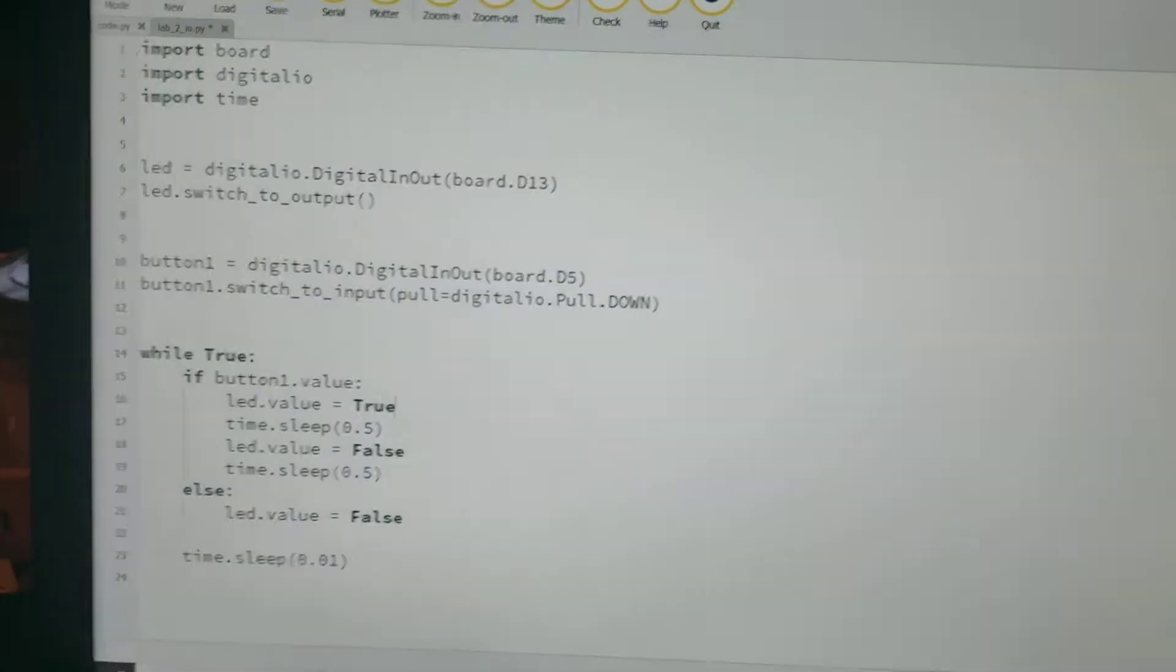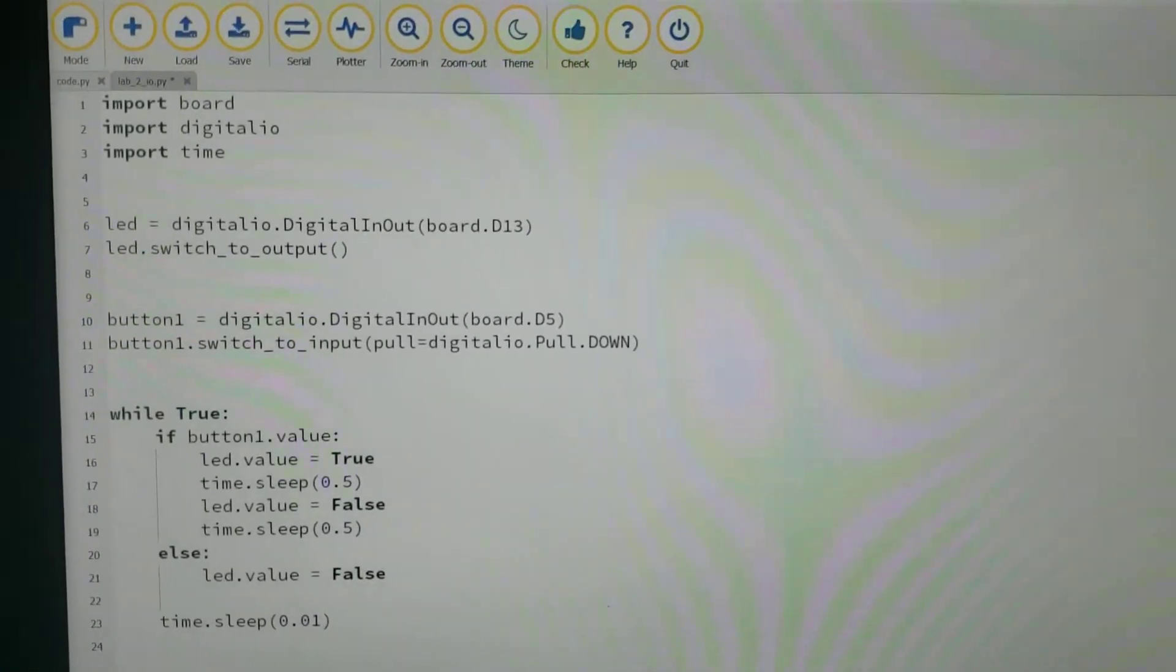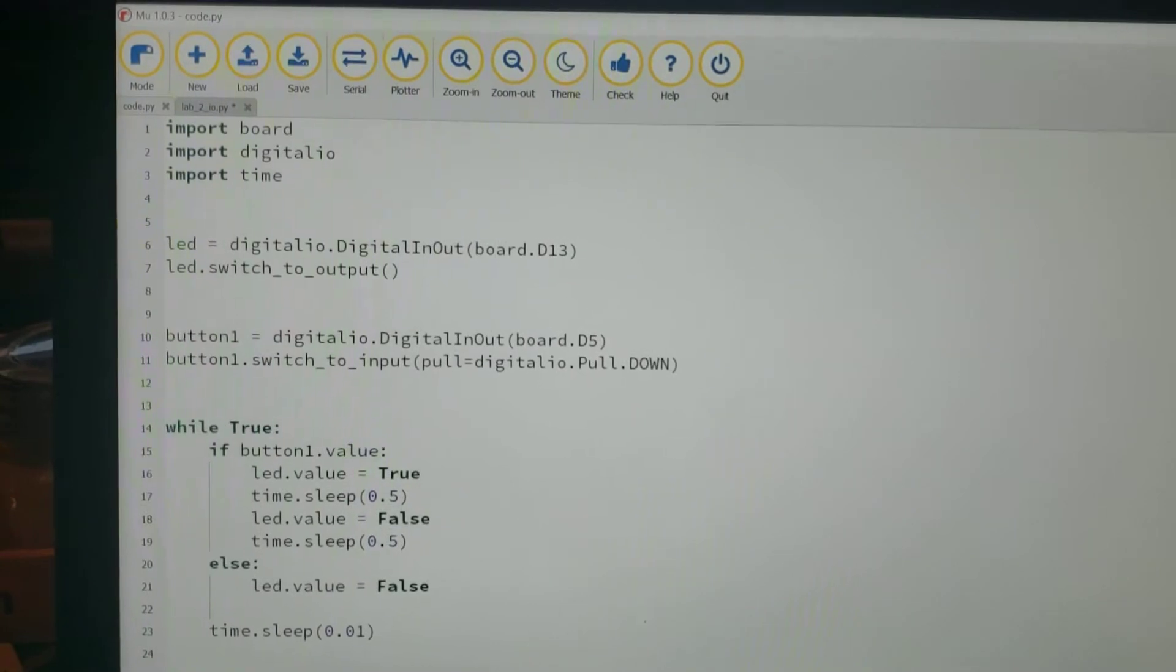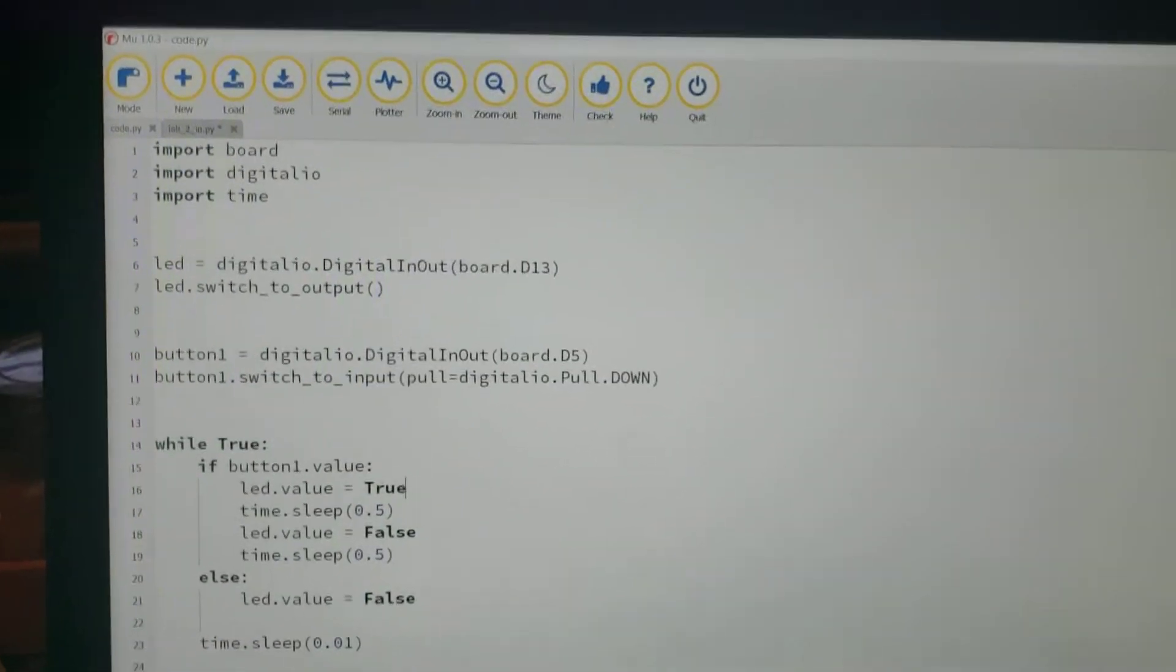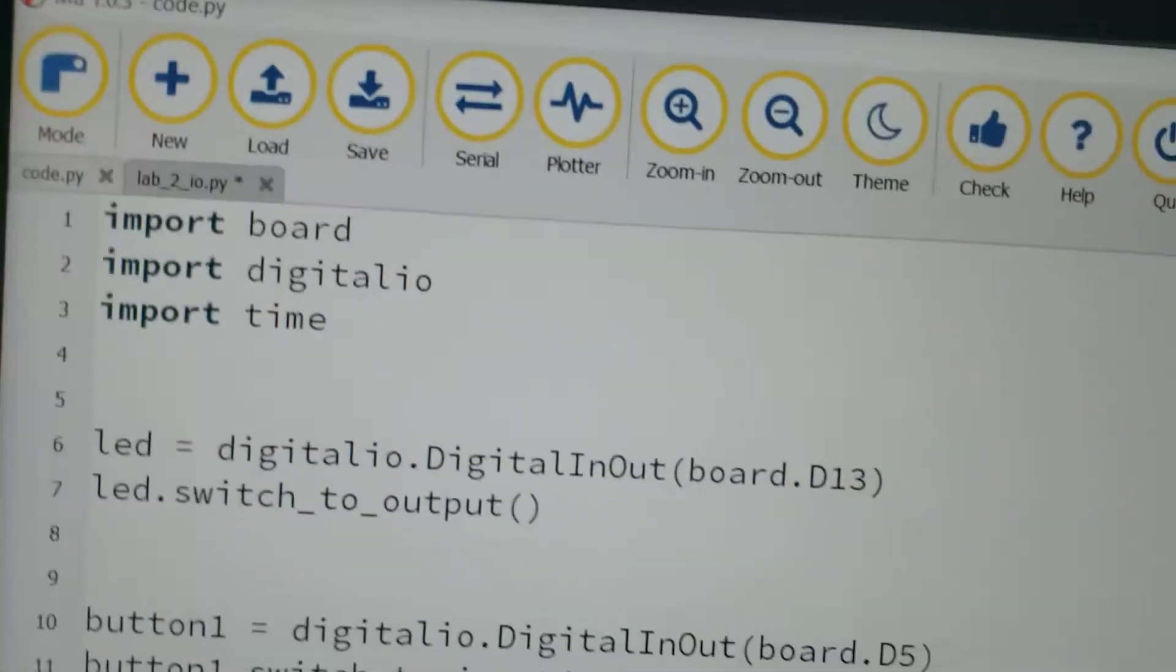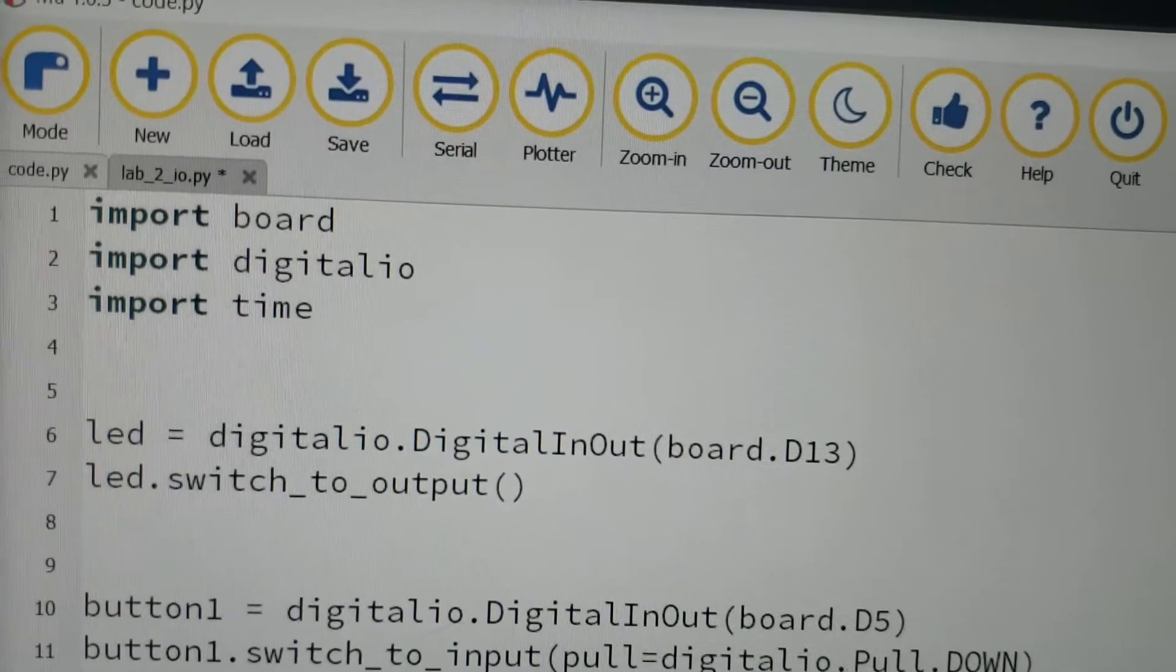We're looking at basic digital IO, so we're assigning an LED to an output and a button to an input, and that button will trigger the output. So here in the code we've got import board, import digitalio, import time, all these libraries are being used right now.